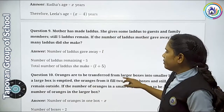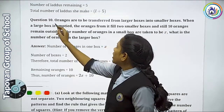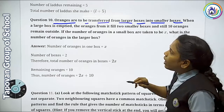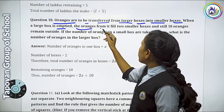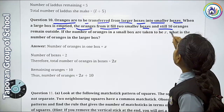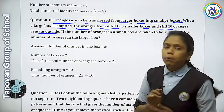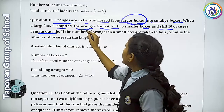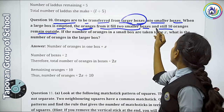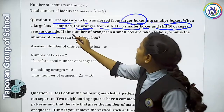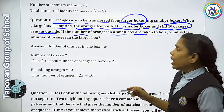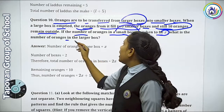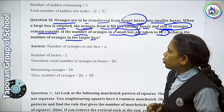Question Number 10: Oranges are to be transferred from a larger box into smaller boxes. When the larger box is emptied, the oranges fill the smaller boxes and still 10 oranges remain outside. So here, a big box of oranges was shifted into small boxes. After shifting, both boxes got filled and 10 oranges remained. If the number of oranges in each small box is x, what is the total number of oranges in the larger box?